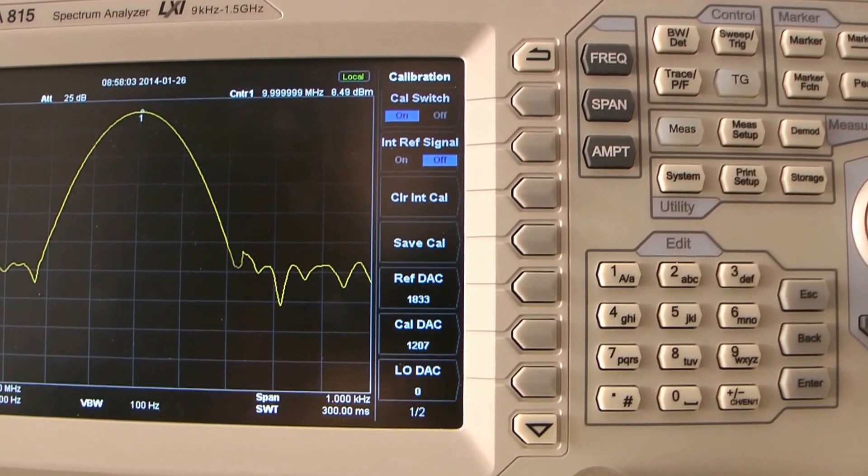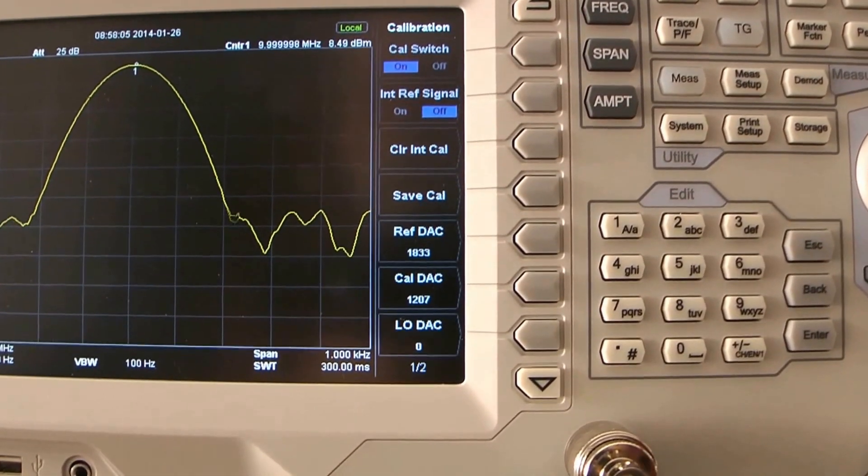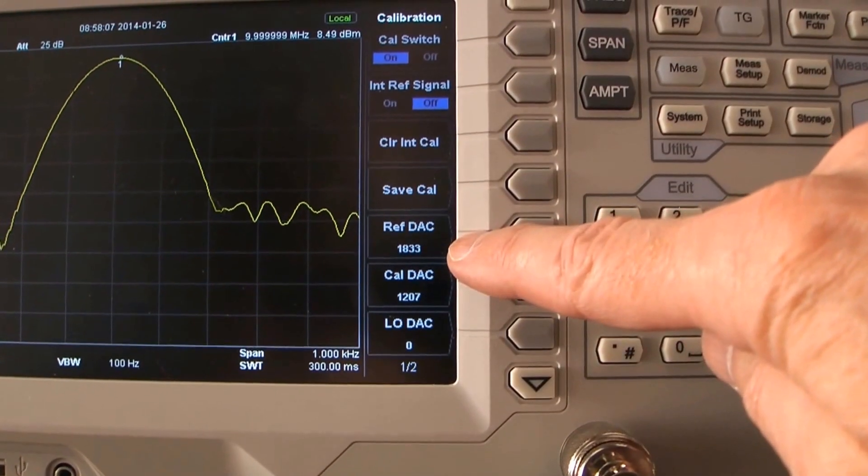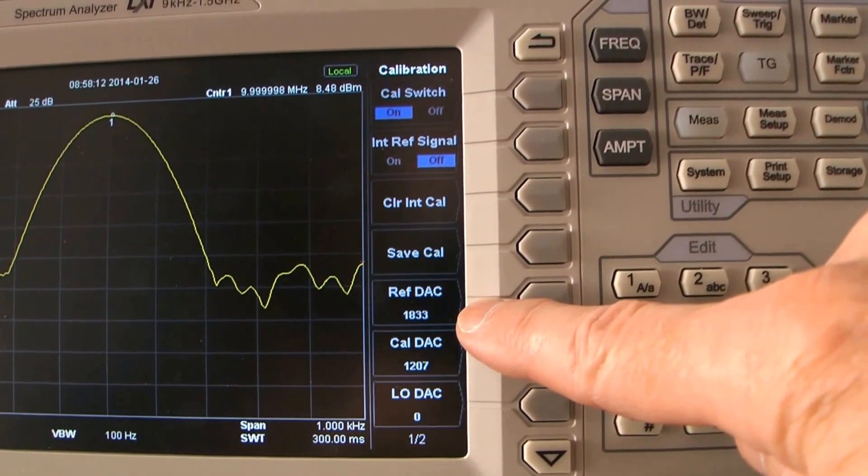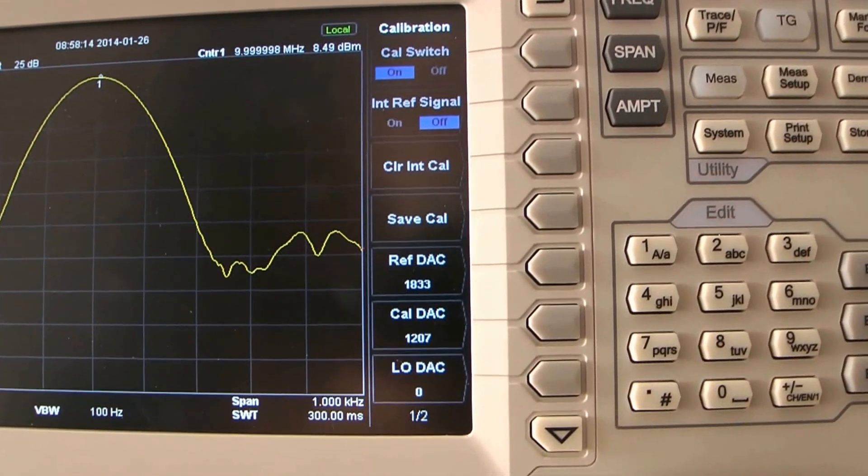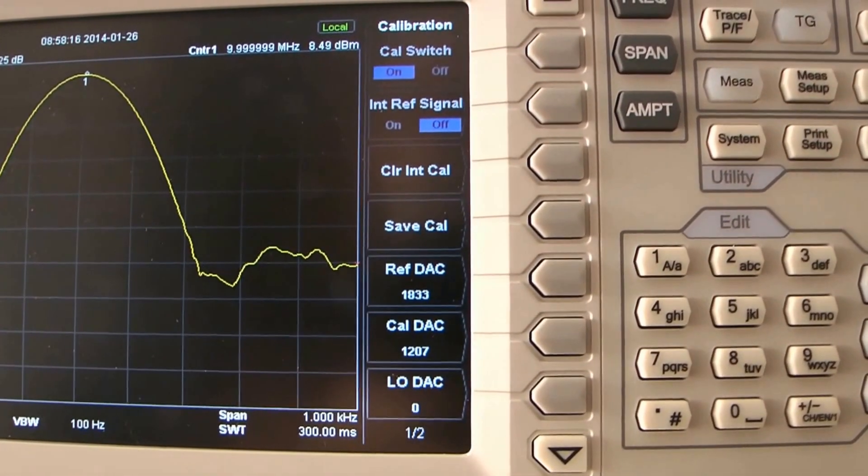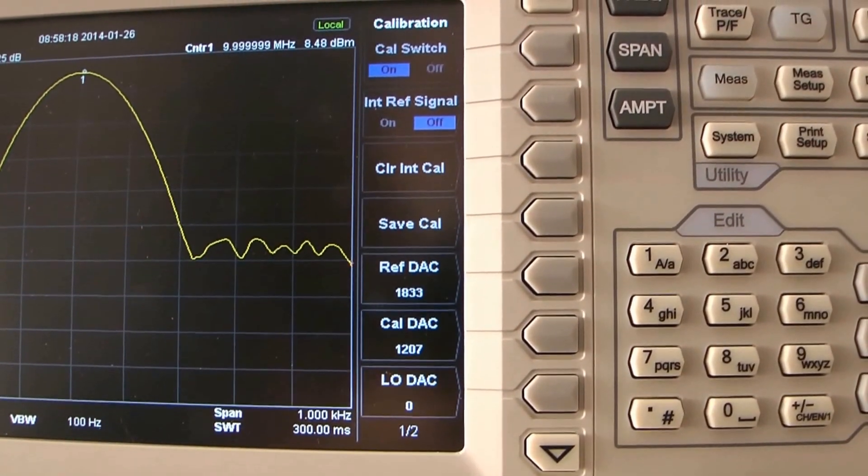So with the unit that I have, this was originally factory set at 1846. I discovered if I knocked it down to 1833, I could get another about one or two hertz of accuracy.